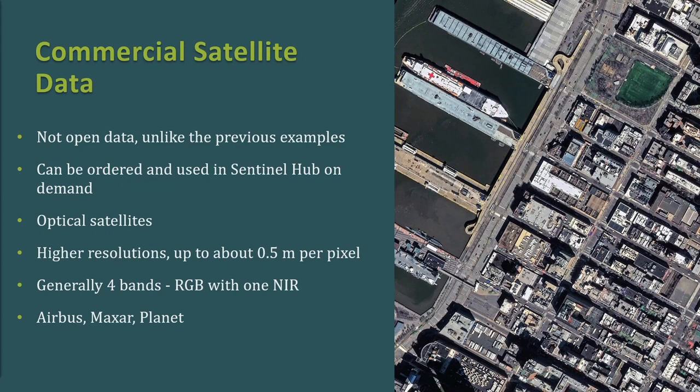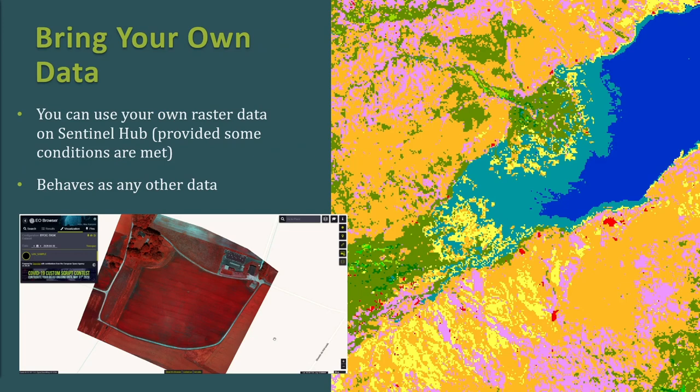Also provided is commercial satellite data. Unlike the previous examples, this data is not open — you need to pay for it — and you can order and use it on Sentinel Hub on demand. These are optical satellites offering much higher resolutions up to about 0.5 meters per pixel, and they generally offer four bands: RGB with one near-infrared band. The providers are Airbus, Maxar, and Planet.